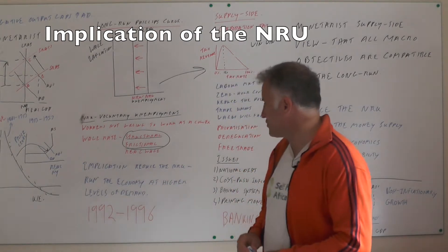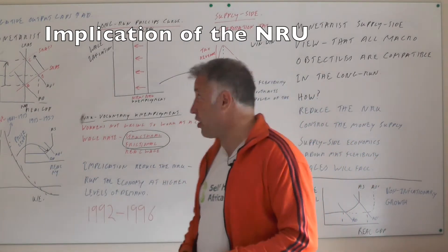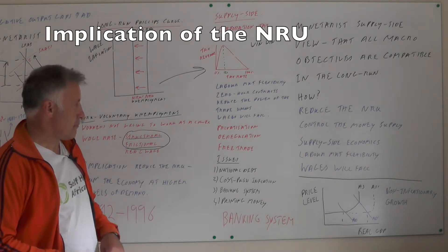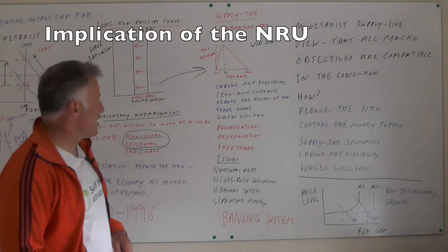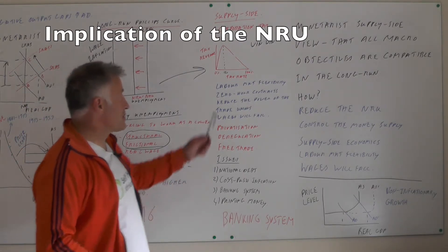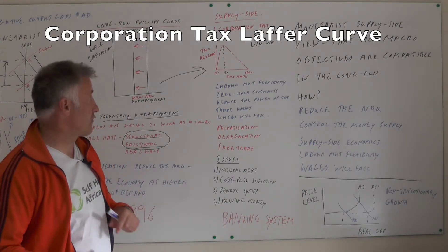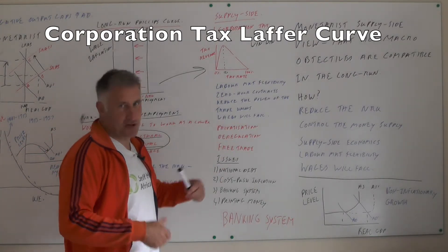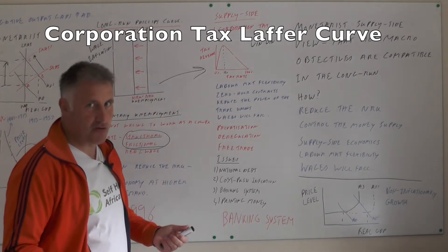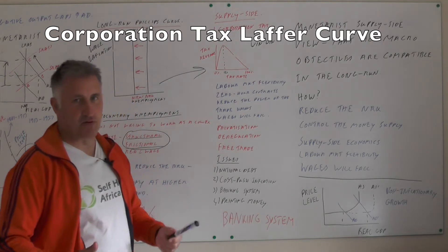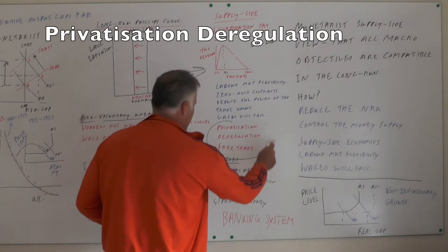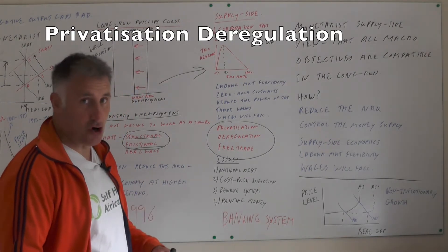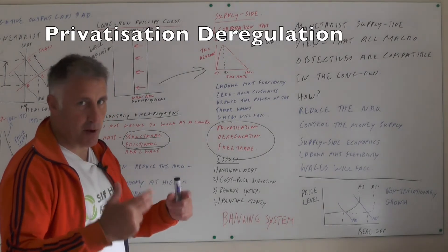By reducing the natural rate of unemployment we can run the economy at high levels of demand. In an exam with 40-50 minutes for an essay you won't cover every supply-side policy, but key ones include: corporation tax, which conforms to the Laffer curve — reduce it and you tend to get more tax revenue back, a win-win argument. Introducing labour market flexibility through zero-hours contracts and reducing trade union power lowers wages and raises employment. Privatisation, deregulation, and free trade all force firms to be more innovative, reduce costs, and increase productivity, shifting both short-run and long-run aggregate supply curves outwards.